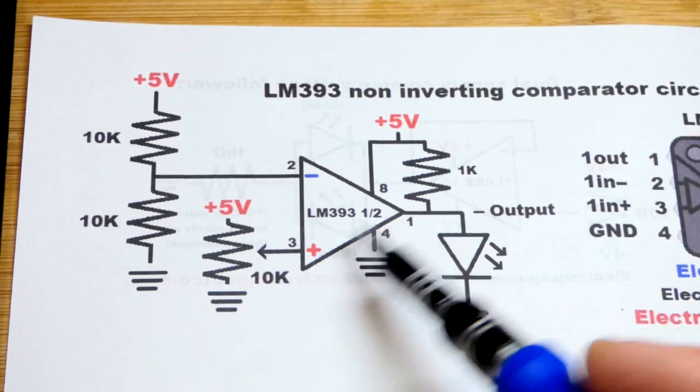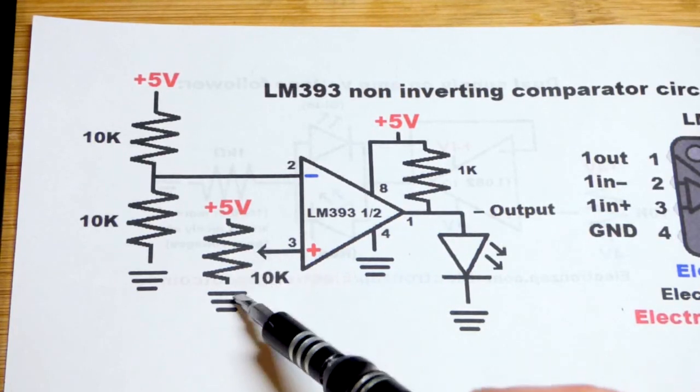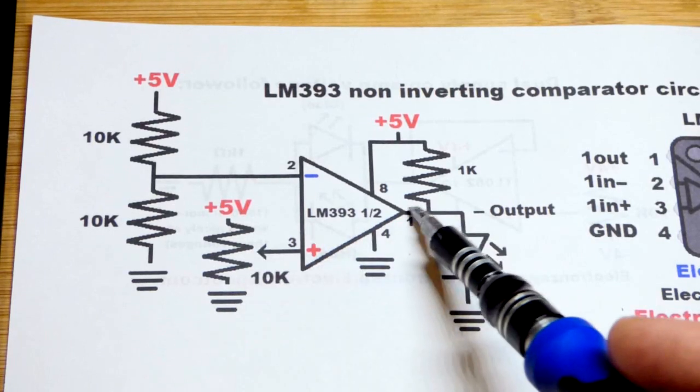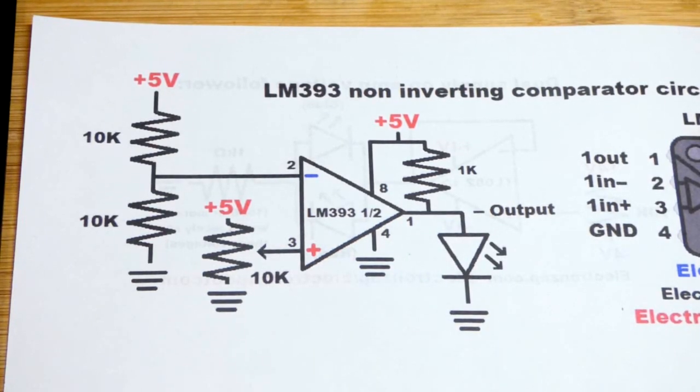When we're above 2.5 volts in that region, we'll have a high output. When we're below that region there, halfway to 0 volts, so 2.5 to 0, we will have a low output, a comparator.